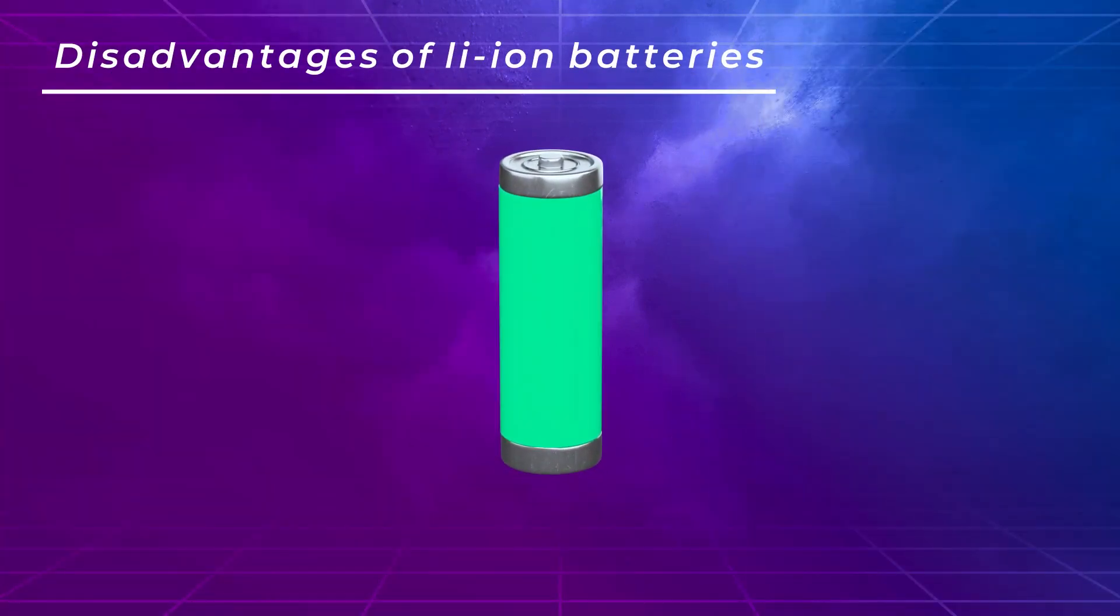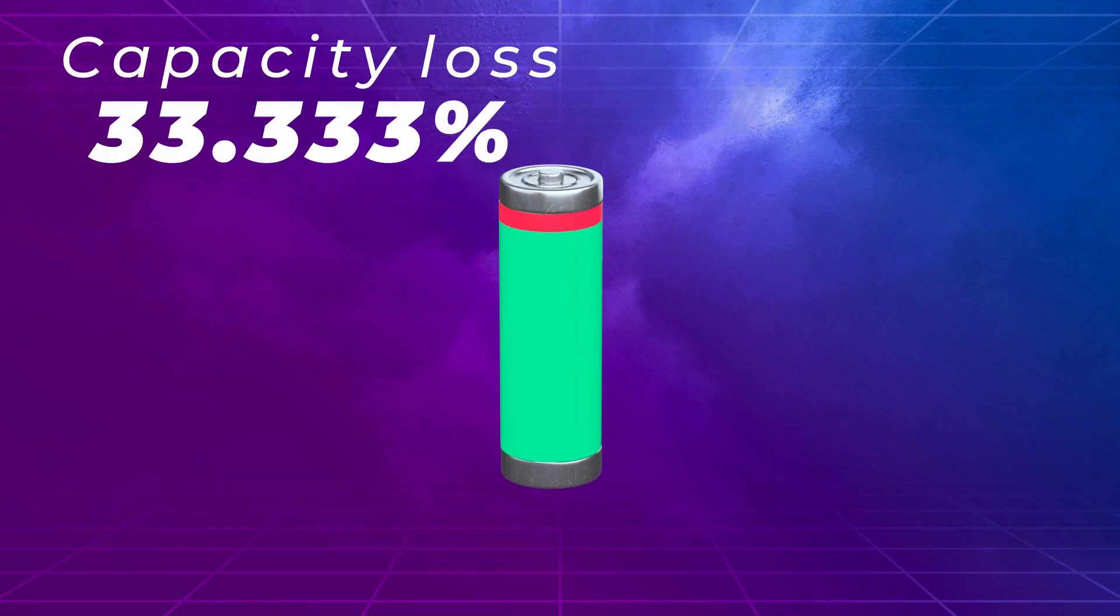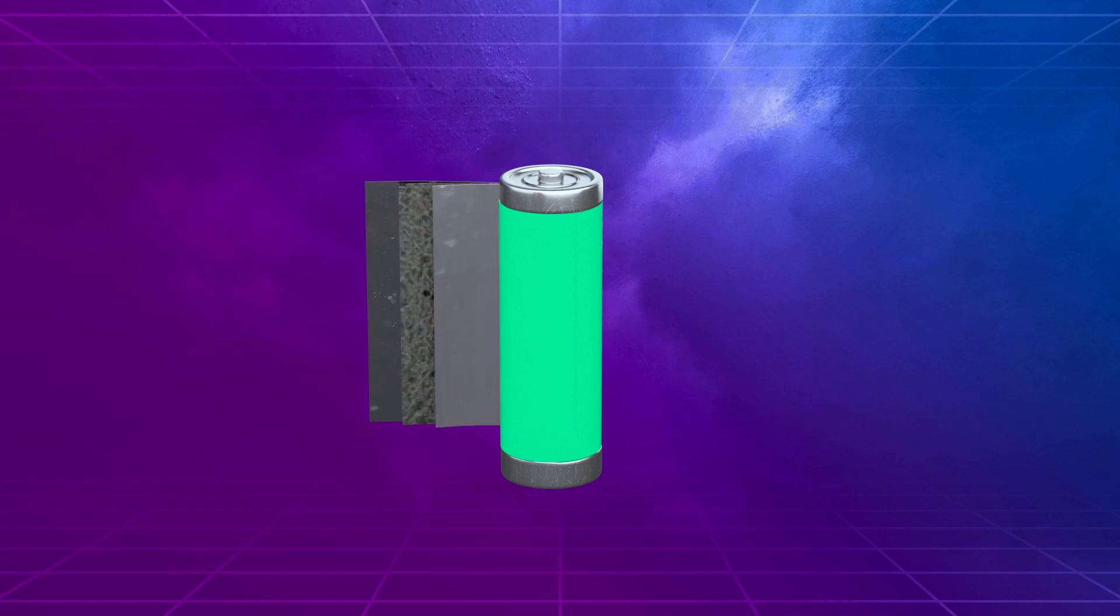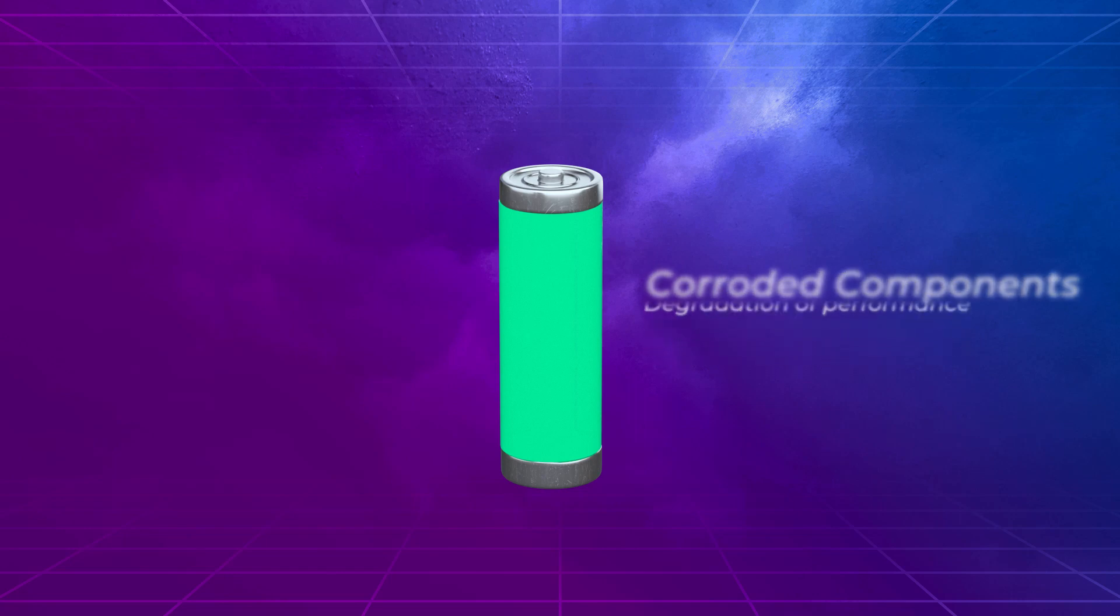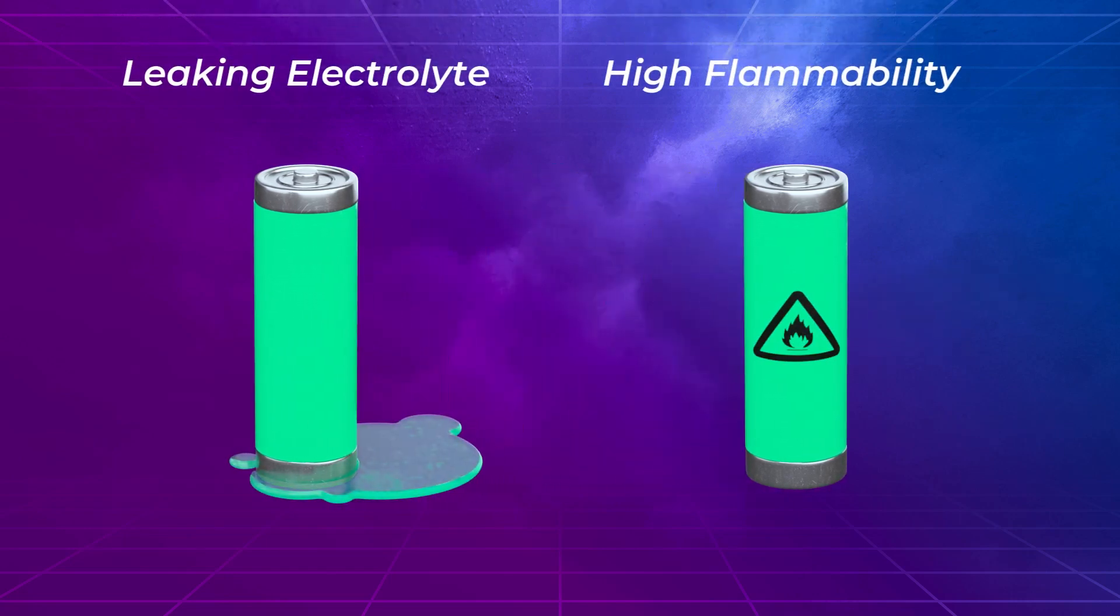Some of the main drawbacks of the lithium-ion batteries we use today, which solid-state is trying to solve, is that cells can lose about a third of their capacity within a decade of use, where over time compounds in the liquid can corrode internal battery components and can experience degradation or solid material build-up inside, both of which lead to a degradation of battery capacity and overall performance. Then there is the risk of leaking electrolyte and a high flammability, which is a safety risk.